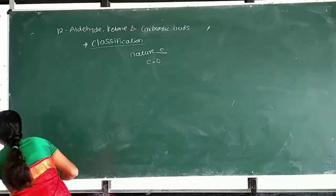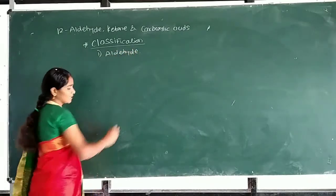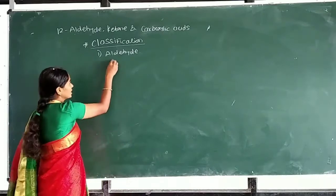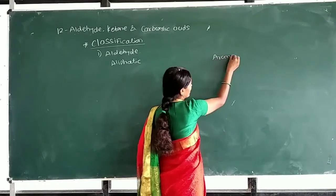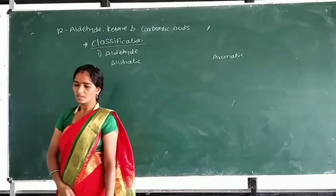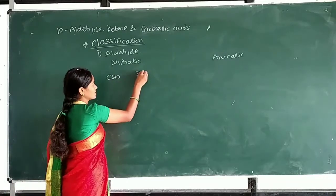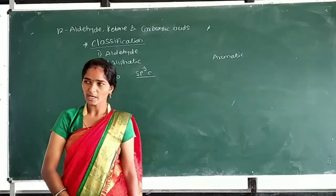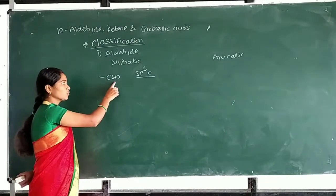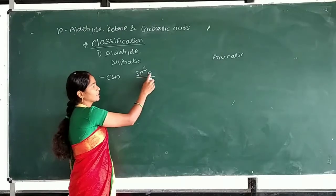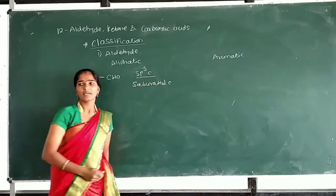First, classification of aldehydes. Aldehydes are classified into aliphatic aldehydes and aromatic aldehydes. In aliphatic aldehydes, the C=O formyl group is attached to an sp3-hybridized carbon, which means it is a saturated carbon.